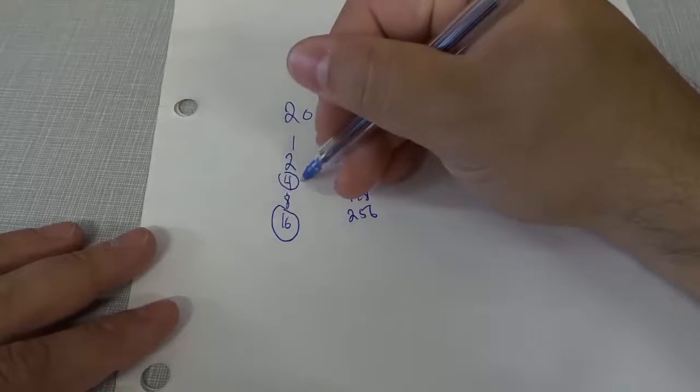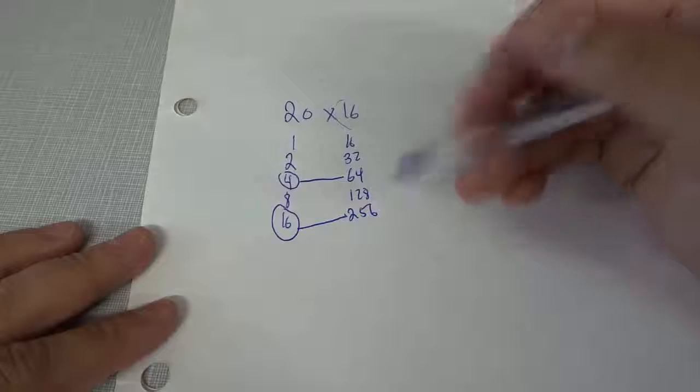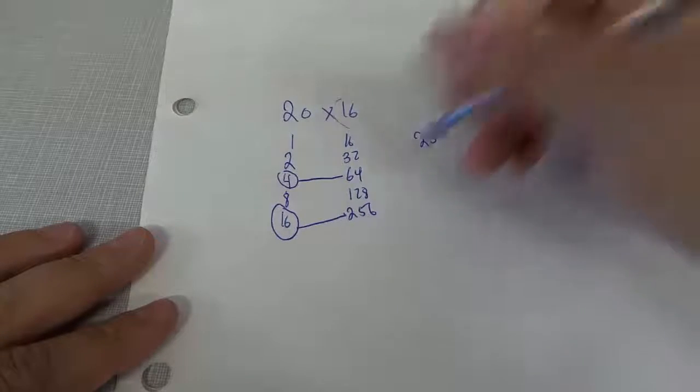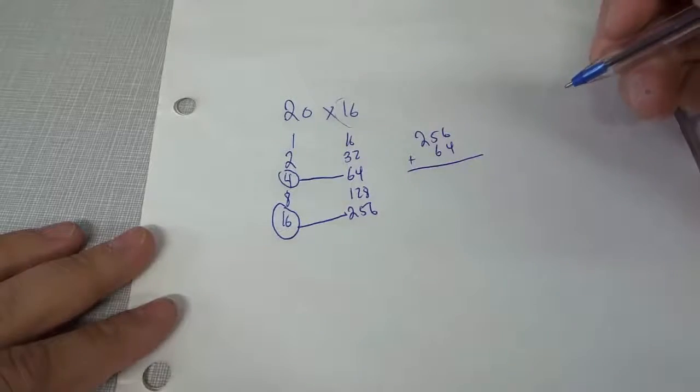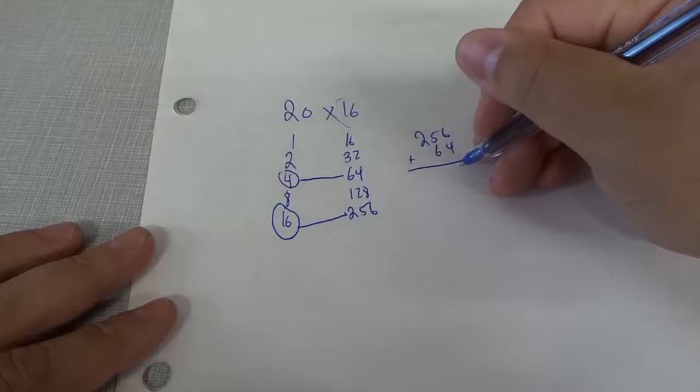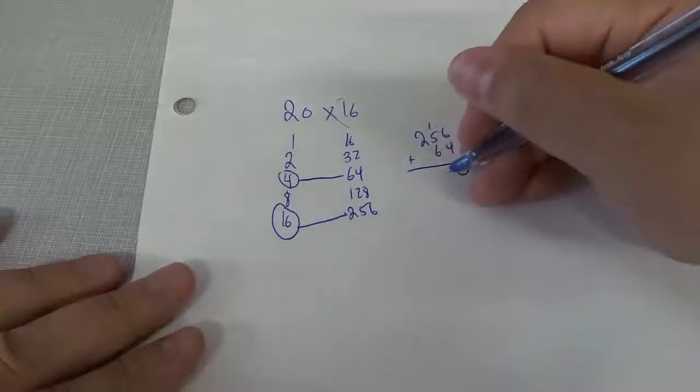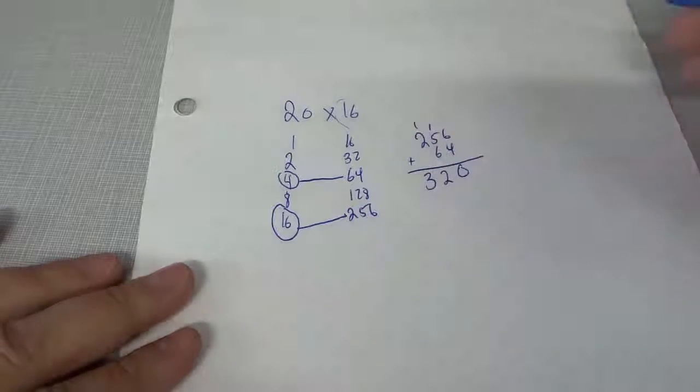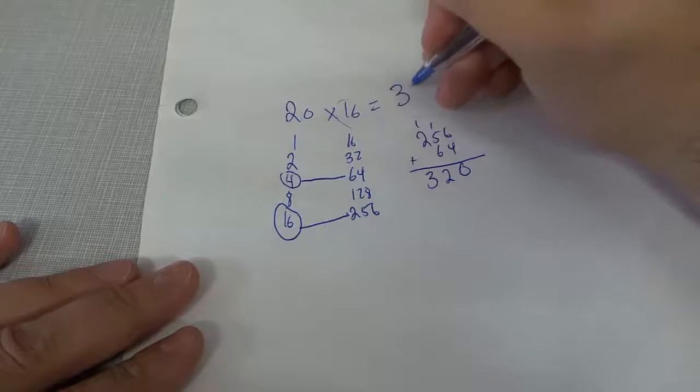So all that I have to do now is get the corresponding numbers on the right row from those two numbers and add those two numbers up. So we have 256 and we also have 64. So I'm going to take these two numbers and I'm going to add them up. Six plus four equals 10. So we're going to put a zero, carry the one, five plus six equals 11 plus the one is 12. Put a two, carry the one, two plus one is three, 320. There's your answer. 20 times 16 equals 320.